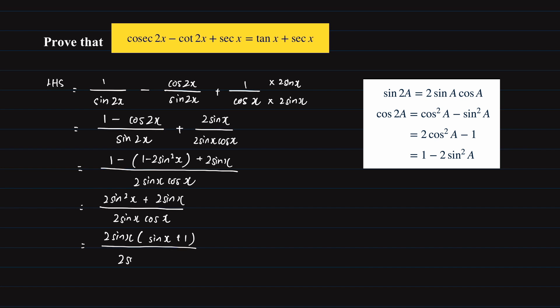Cancelling out similar terms on the numerator and the denominator, which is 2 sine x, we will then have sine x over cosine x, which gives us tangent x, plus 1 over cosine x, which is secant x. This gives us the right-hand side of the equation.